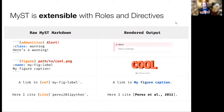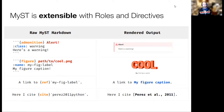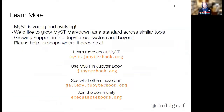As an example, I'm showing an admonition directive that renders itself as a nice little box, and a figure directive that can attach a label to itself so you can reference it later. These are also examples of roles — inline content that you can insert into your markdown document to reference another figure or a citation for a bibliography.